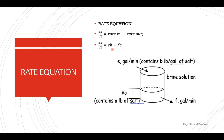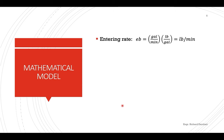The rate in is equal to E — the volumetric flow rate of the solution going in — multiplied by the initial concentration of the salt in pounds per gallon. The rate of the solution going out is F multiplied by the final concentration. So this is your brine solution: E goes in with the initial concentration of the salt, and then the solution goes out.